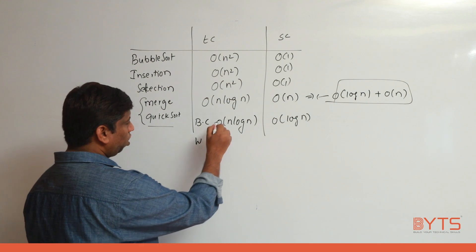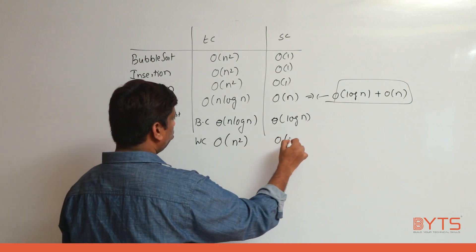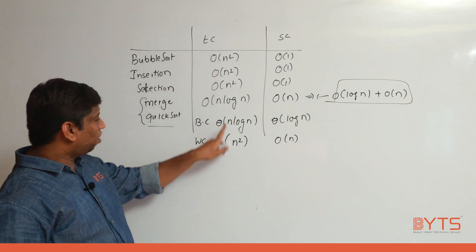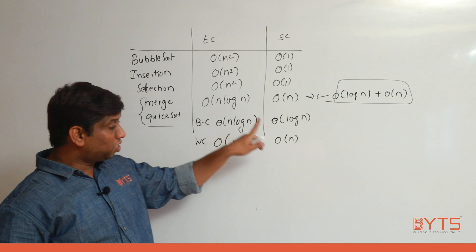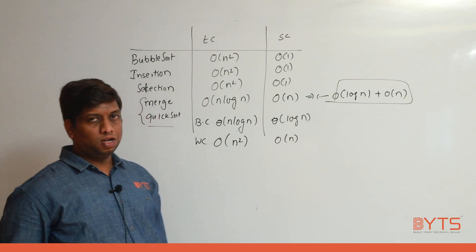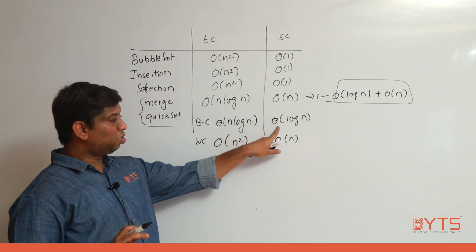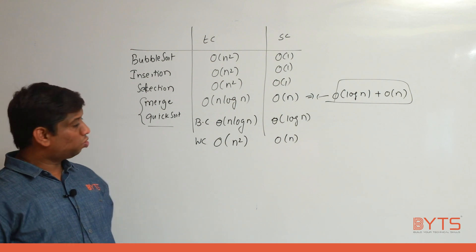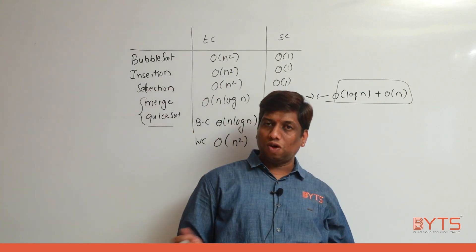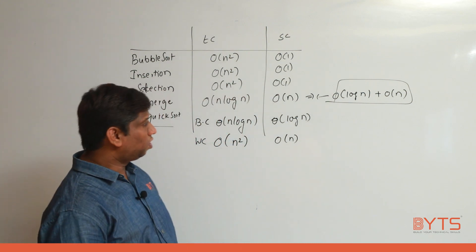In the worst case, quick sort's time becomes O(n²) and space becomes O(n) — as bad as bubble sort. But in the best case, it is the best sorting technique because both time and space are very low. You need to know when to use quick sort: if there is a pivot that divides the array into exactly two halves, quick sort will be the fastest. But in real time, that may not always happen.